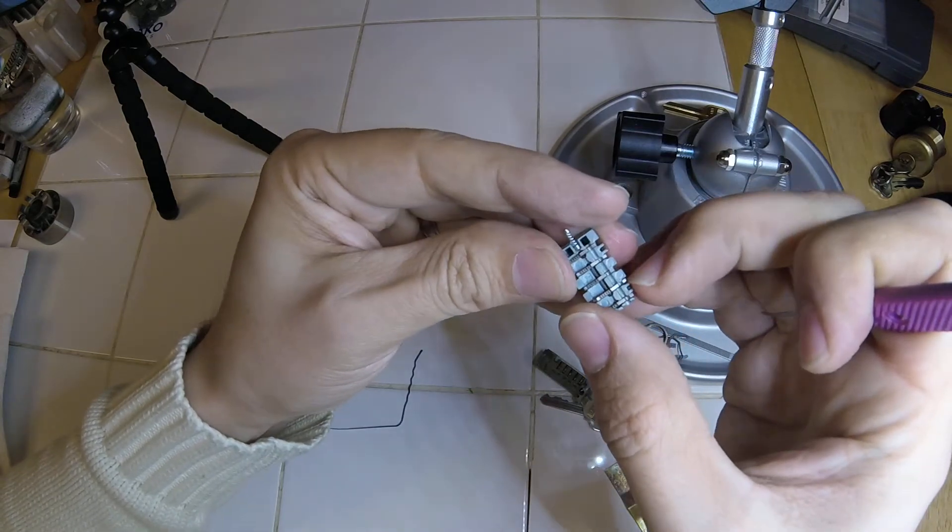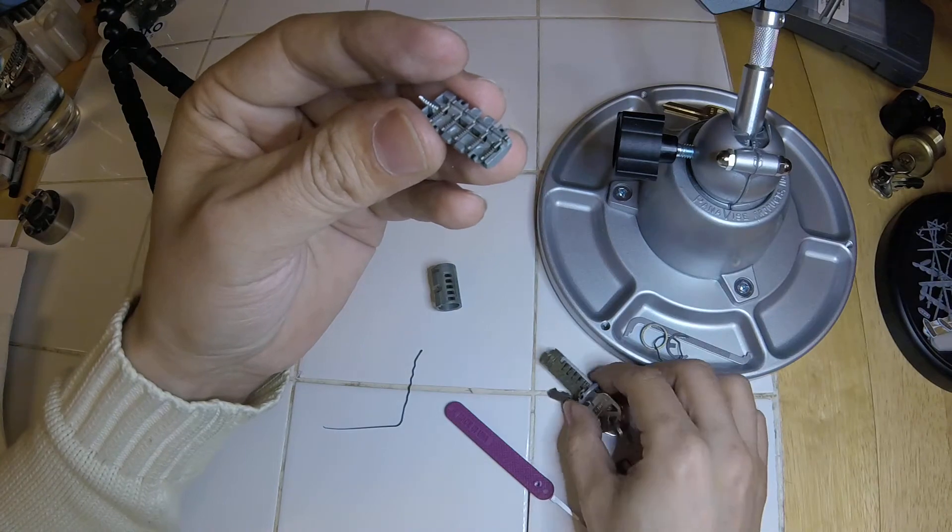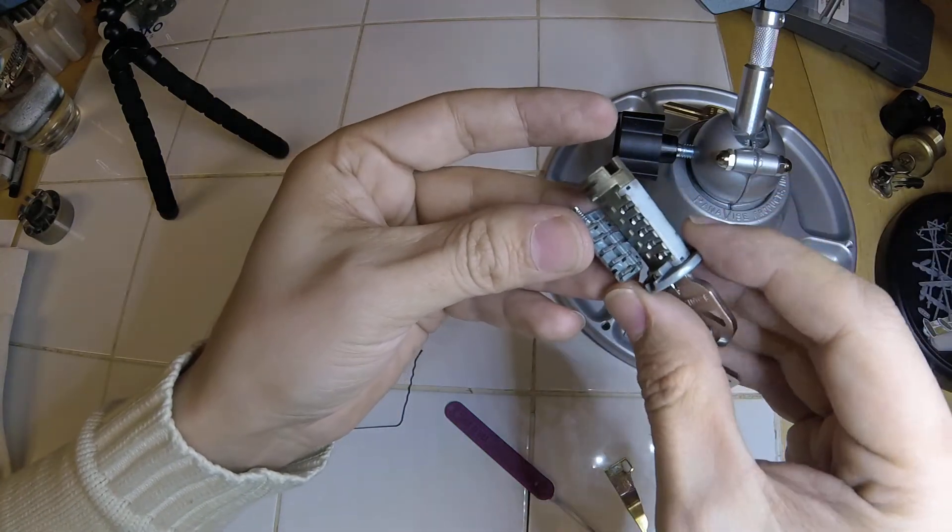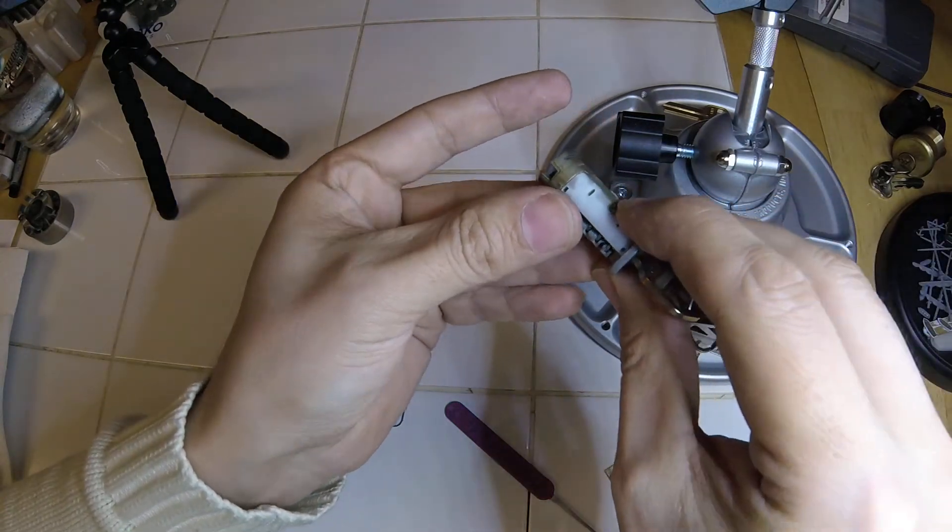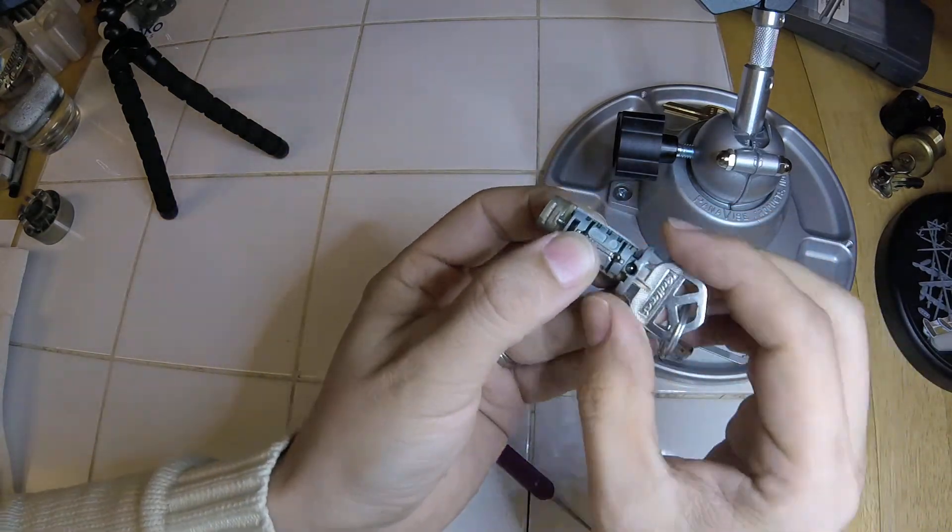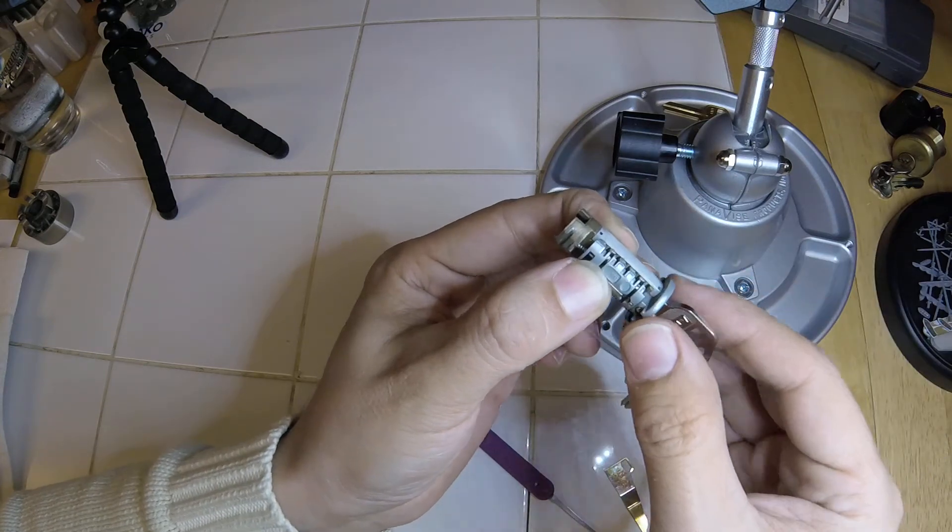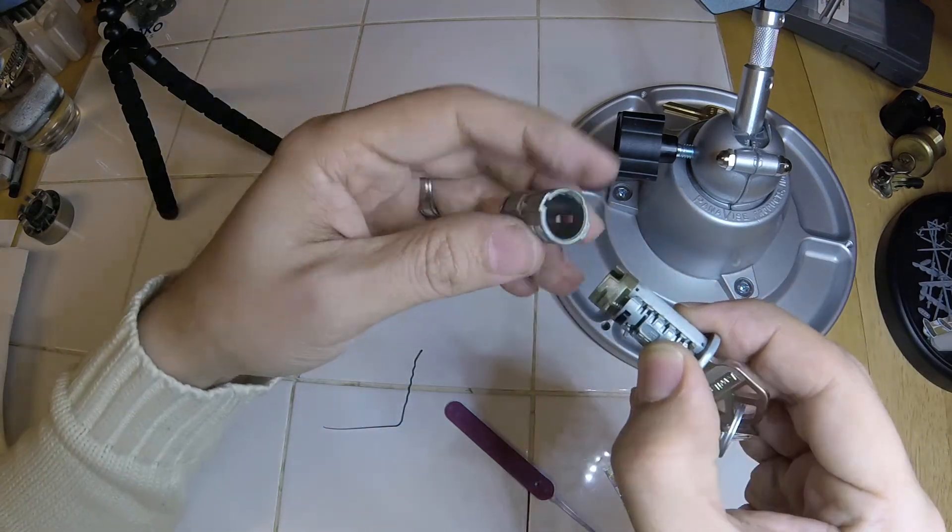So to put it back together, all you do is get all these lined up in here again. And you can do it with the key in, which I like. I've only taken this apart once before just to learn how it worked. And that's it. Now it's keyed for this.